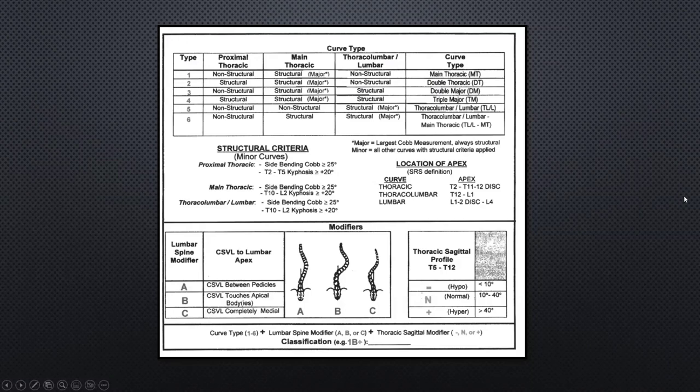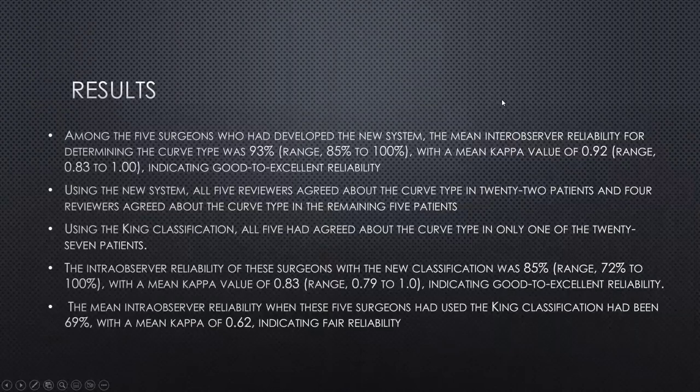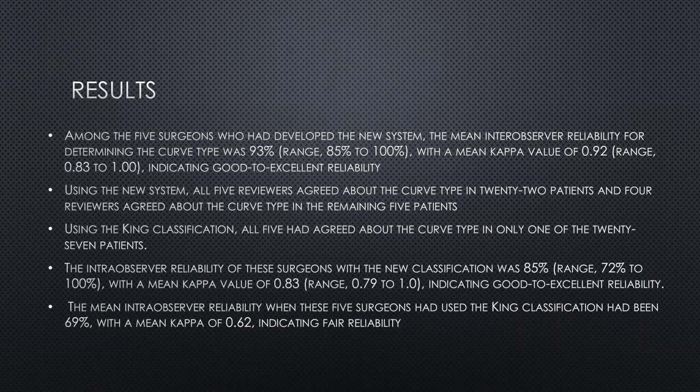The authors acknowledge there can be 42 combinations of curves, so this isn't something you calculate for every scoliosis patient in clinic — it's a tool for preoperative planning. To validate the system, they had 27 patients reviewed by five surgeons. Inter- and intra-observer reliability was excellent — in the low 90s on kappa values indicating good to excellent reliability. All five reviewers agreed on curve types in 22 of the 27 patients, and four of five agreed on the remaining five.